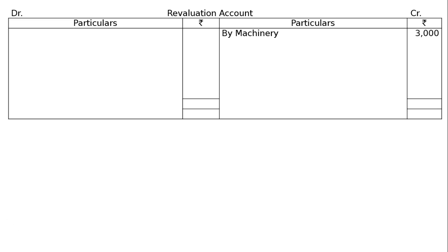Stock is to be valued at Rs. 10,000. However, stock is given in the books at Rs. 8,000. Hence, the increase in stock is Rs. 2,000. It is a gain and credited to the revaluation account. By stock, Rs. 2,000.